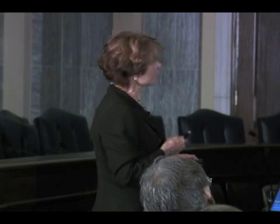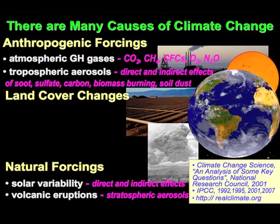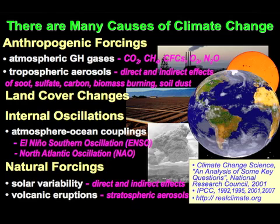A primary forcing in terms of radiative forcing is the anthropogenic forcing from greenhouse gases, which produce a positive radiative forcing, and from tropospheric aerosols — tropospheric as opposed to stratospheric — because these reside in the troposphere and produce a cooling. And then we have things like land cover changes.